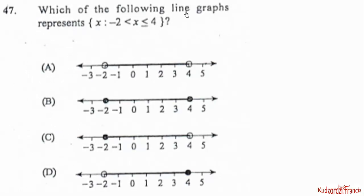Item 47: Which line graph represents the given inequality? The boundaries are 4 and negative 2. At 4, the circle should be filled in because the inequality includes an equals-to sign there. At the other boundary, the circle will be open since there is no equality sign. This corresponds to option D.